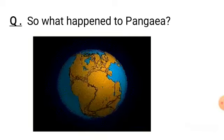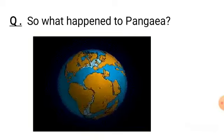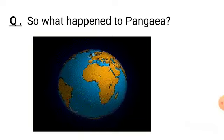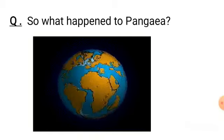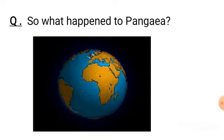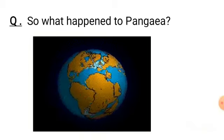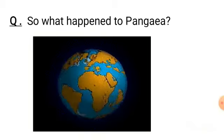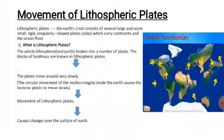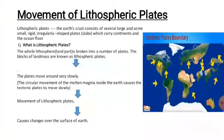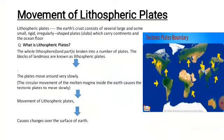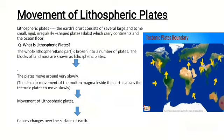Those pieces of land started drifting away from each other. The big land masses became continents and water collected between these land masses to form the oceans as we know them today. Now we come to the movements of the lithospheric plates.